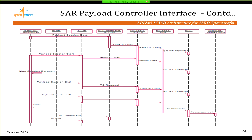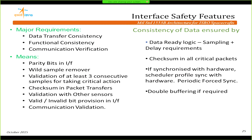Safety features we look for include consistent data transfer verified by comparing across different sensors where available, and communication verification using parity bits and wild sample removers. Data is validated for at least three consecutive cycles. Consistency is critical because with 32 words of data, old and new data can get mixed. A data-ready flag ensures the subsystem raises the flag only when data is fully ready. Critical packets include checksums for verification, and double buffering is used where required.